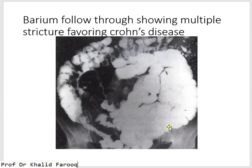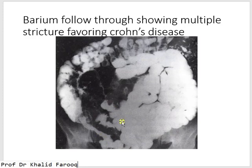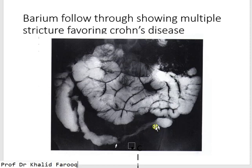On another barium follow-through examination, there is prominent hold-up of contrast in the jejunum and evidence of strictures — number one, two, three, and four — with normal intervening areas, that is skip lesions. This is because of Crohn's disease. Another example of Crohn's disease shows proximal hold-up of contrast with dilated small bowel, with one stricture in a relatively normal area and another stricture in the distal portion.